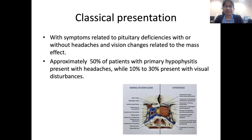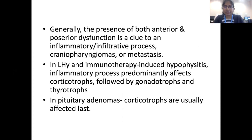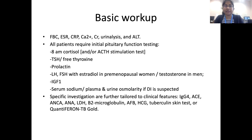The classical presentation includes symptoms related to pituitary deficiencies without headaches and vision changes related to mass effect. Approximately 50% of patients with primary hypophysitis present with headaches, while 10 to 30% present with visual disturbances. In lymphocytic and immunotherapy-induced hypophysitis, inflammatory processes predominantly affect corticotrophs, followed by gonadotrophs and thyrotrophs — unlike pituitary adenomas, where corticotrophs are usually affected last. Basic follow-up includes initial investigations and the anterior pituitary profile, with DI investigated if clinically suspected.